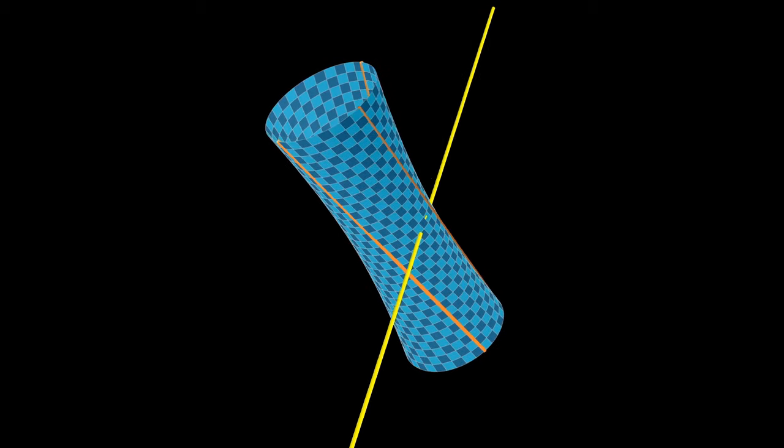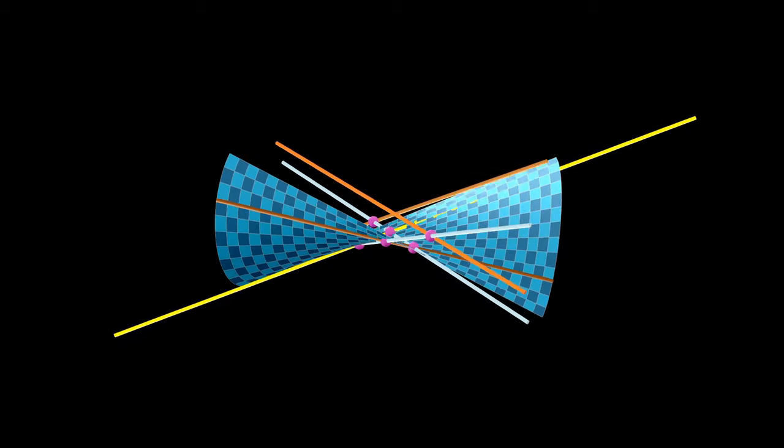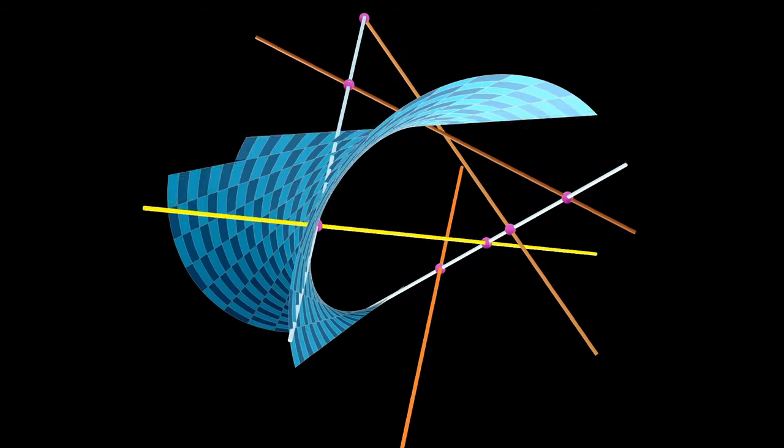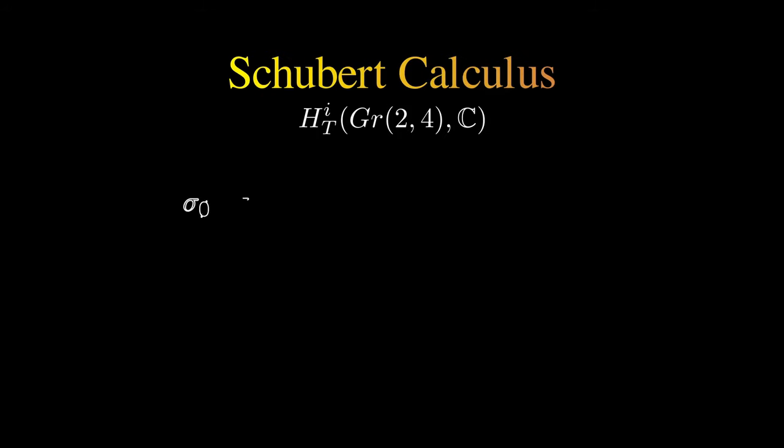The magic number here is two. The number of lines that most of the time pass through four given lines is two. This unintuitive and remarkable fact of enumerative geometry inspires the branch of mathematics called Schubert calculus.